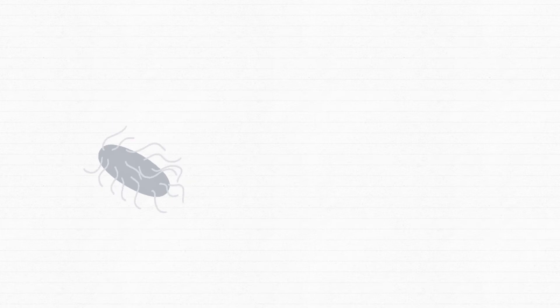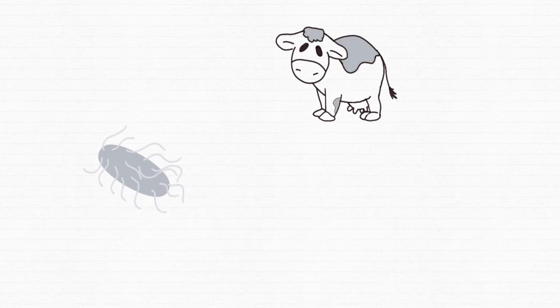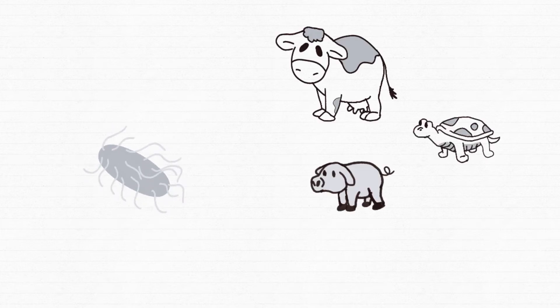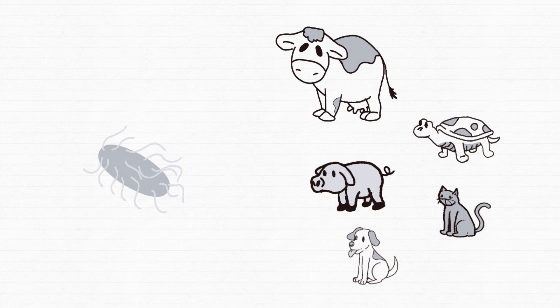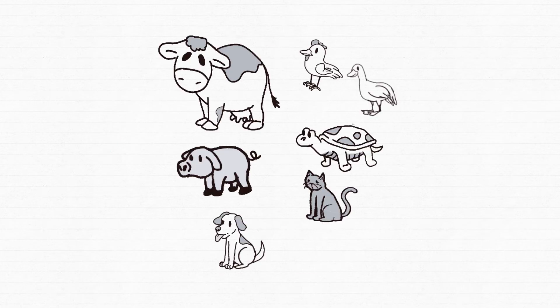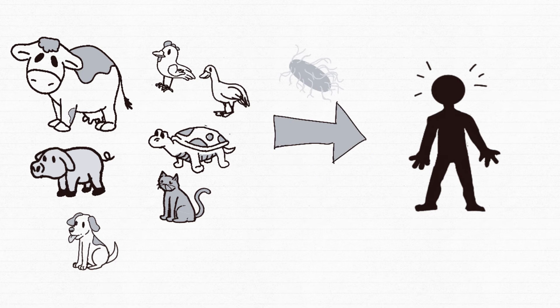Salmonella can live in many animals such as cows, turtles, pigs, cats, dogs, and birds like chickens and ducks. Many types of diseases, such as Salmonella typhi, only live in humans. From these sources, humans can be contaminated directly or indirectly.